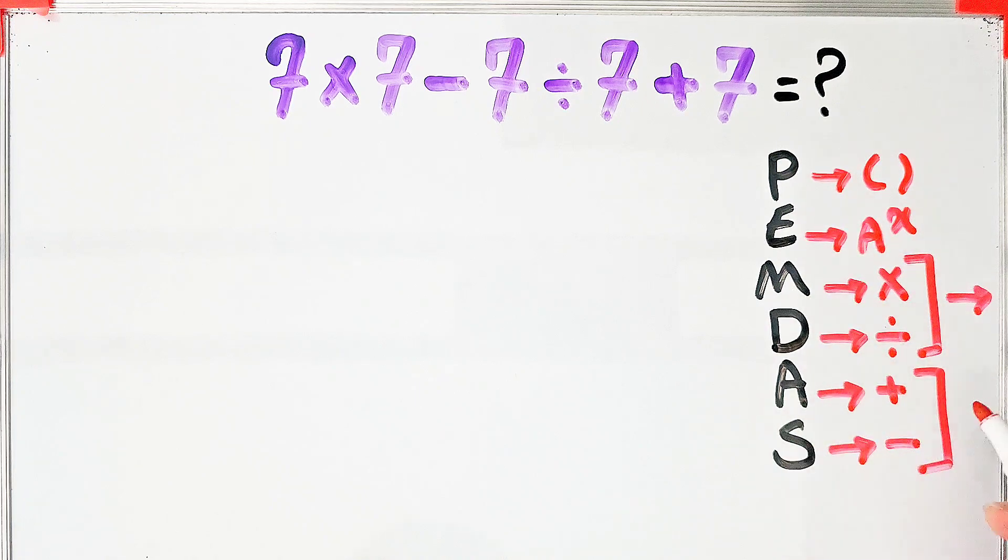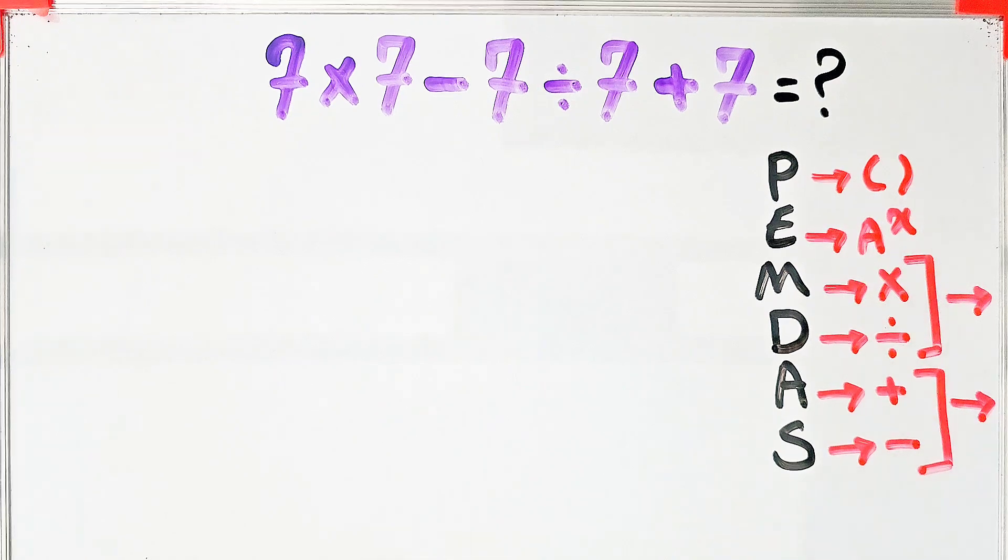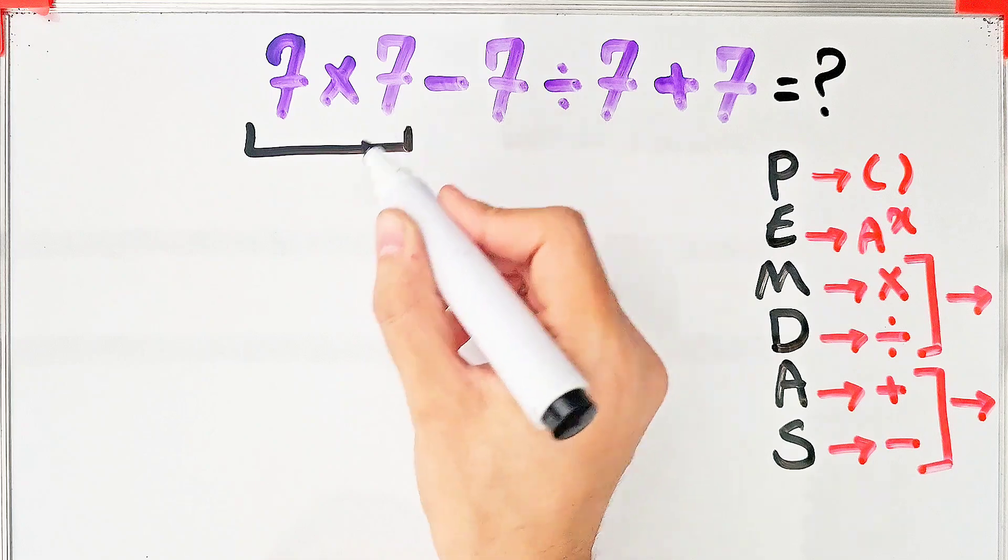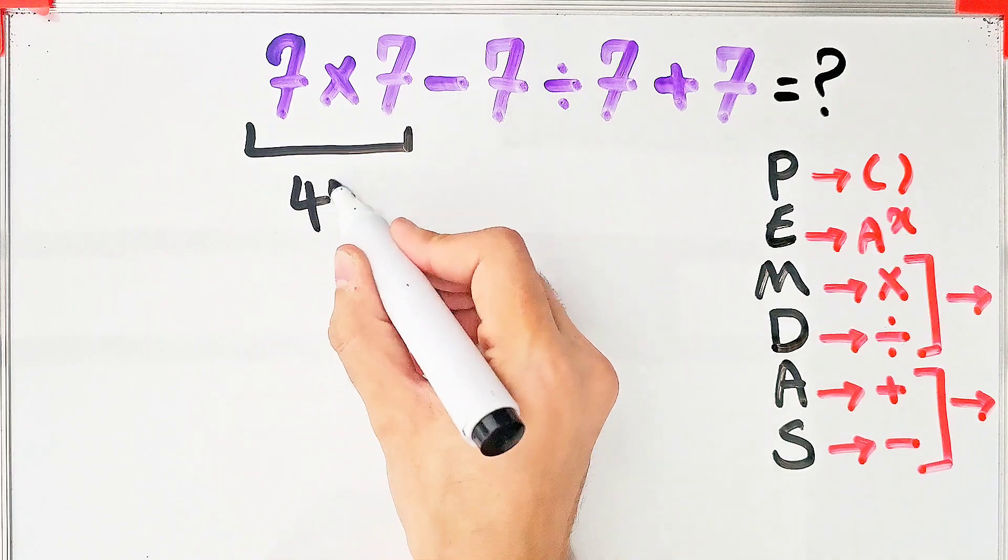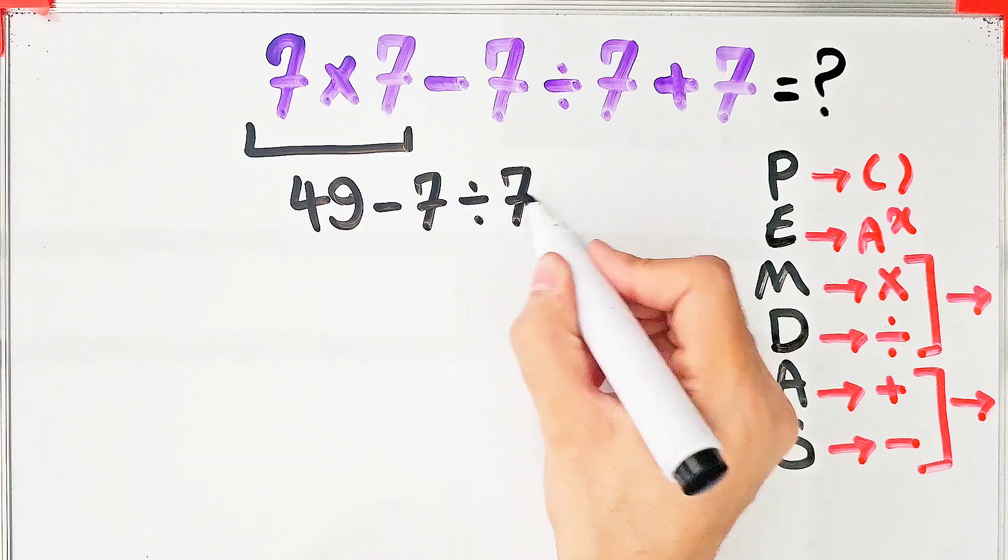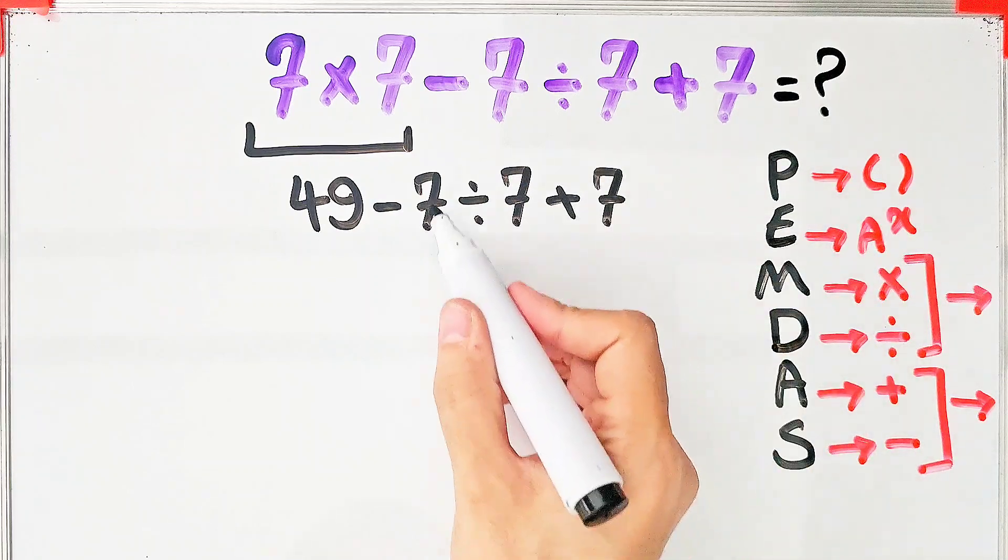According to the PEMDAS rule, first we do this multiplication: 7 times 7 equals 49. Now we have 49 minus 7 divided by 7 plus 7. In this step, we do this division.